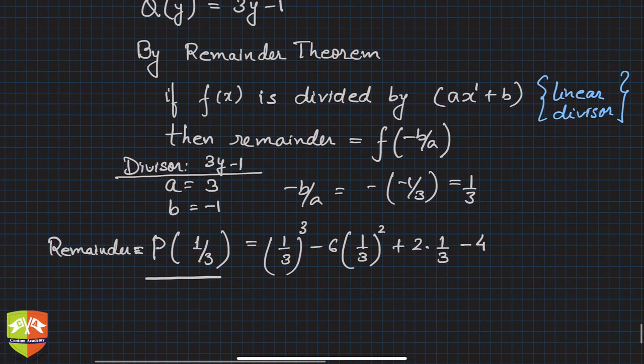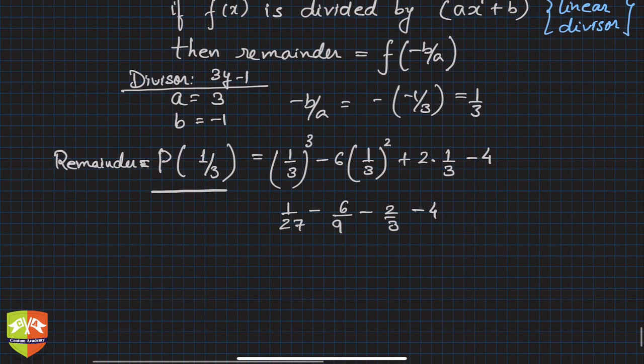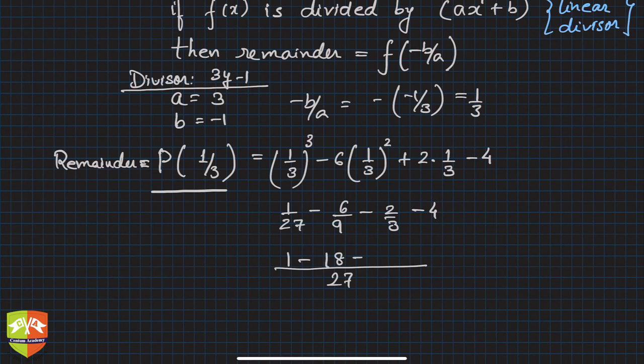This is 1/27 - 6/9 + 2/3 - 4. The common denominator is 27. So we have 1 - 18 + 18 - 108 over 27.